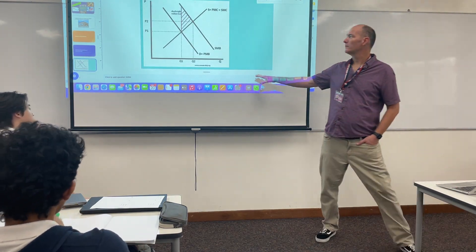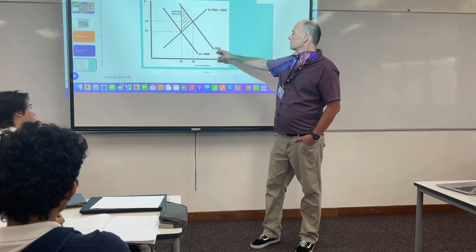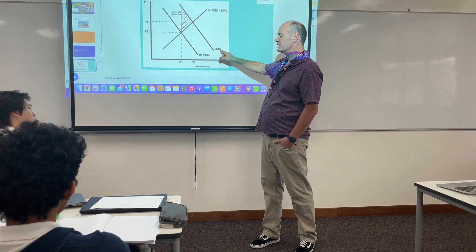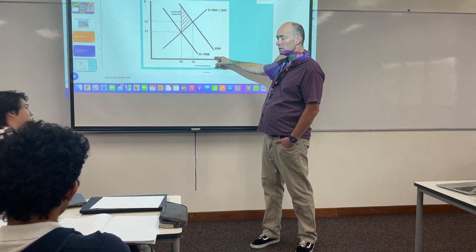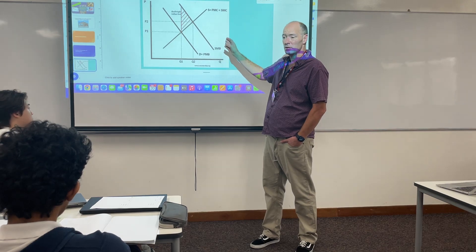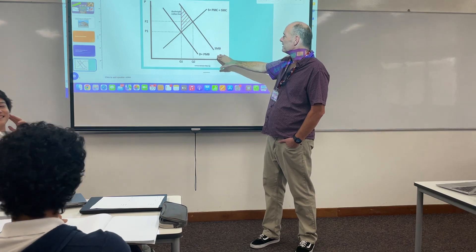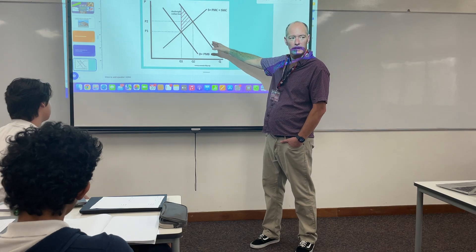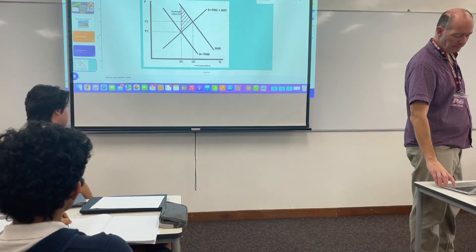This is a positive externality in consumption. Note that the abbreviations on this slide are not the ones I want you to use — the correct ones are marginal social benefit (MSB) and marginal private benefit (MPB). This is actually a slide that Mr. Moon, the other econ teacher, used to use. In any case, this is a concept I covered in the video already. So these two models — negative production and positive consumption — are the ones I've already done in those other videos.